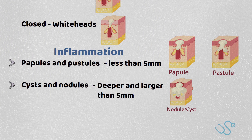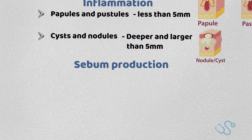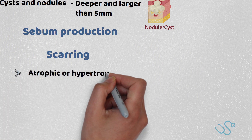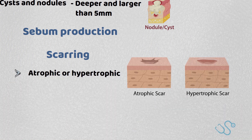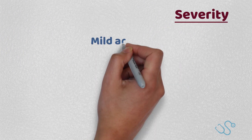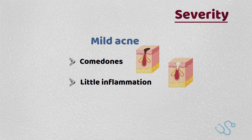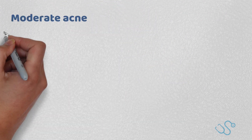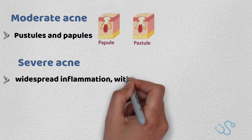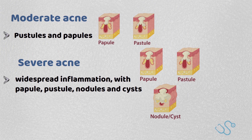In severe cases, these can cause sinuses. There is also often excessive sebum production, and this cycle of events causes scarring, be it atrophic or hypertrophic. With all these features, we can classify the severity of acne. Mild acne has mainly comedone-only disease with little inflammation. Moderate acne has inflammatory pustules and papules, whereas severe acne has widespread inflammation with papules, pustules, nodules and cysts, as well as possible scarring.